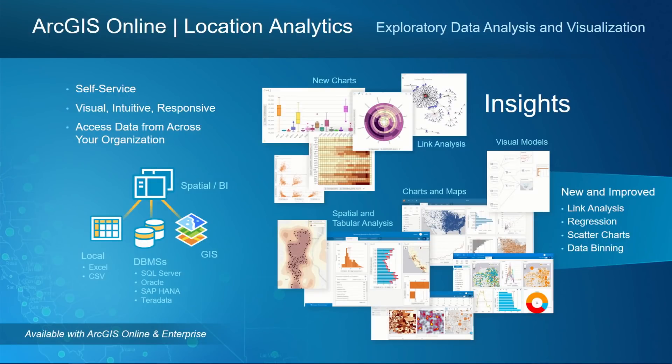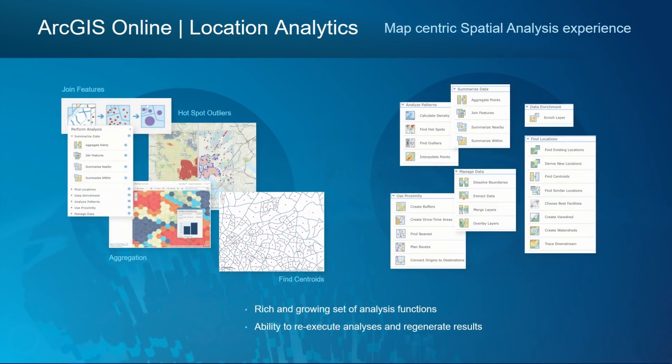The third capability of ArcGIS Online as a mapping and location platform is location analytics. Here we have Insights for exploratory data analysis and visualization. It's got a visual, intuitive, and responsive experience — charts and maps — for people who may not have used maps before but are familiar with charts and business intelligence, and are able to use it effectively to explore and analyze their data. ArcGIS Online also includes map-centric spatial analysis, a rich and growing set of functions that work with layers to create new layers across a wide range of analyses. So those are the three key capabilities: mapping, field mobility, and location analytics.